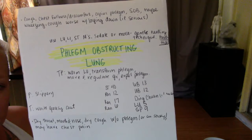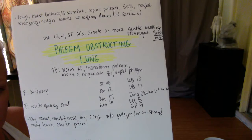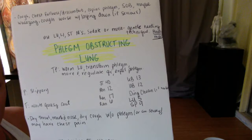Phlegm obstructing the lung points combo: Stomach 40, ren 6, ren 12, ren 17, bladder 12, bladder 13, ding chuan if needed, lung 5, spleen 9.